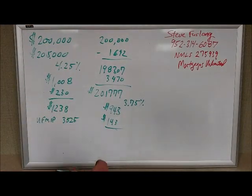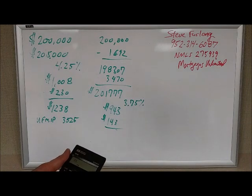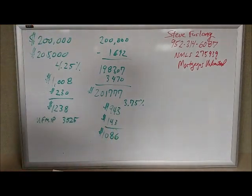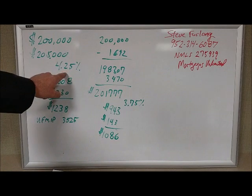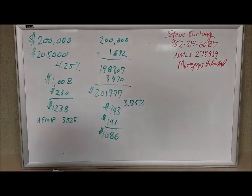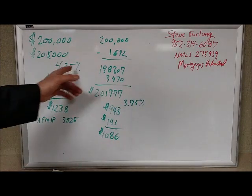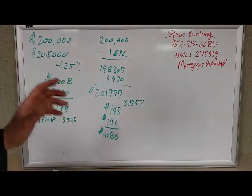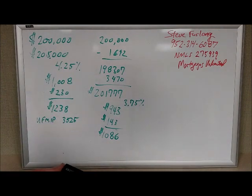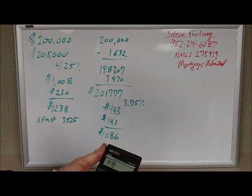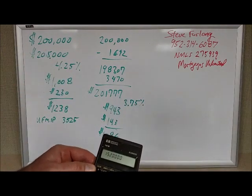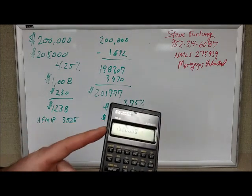So now your new PI and MI payment is 943 plus 143 or 1,086. And so in this example, the key numbers are your current interest rate should be equal to or above what the no-cost interest rate loan is right now, though it could even be less than this and still have a FHA streamline refinance makes sense. But look at the difference. 1,238 minus 1,086. So 1,086 from 1,238. Just in this example, going from 4.25 to 3.75 and the reduction in FHA mortgage insurance reduces your payment by $152 a month.